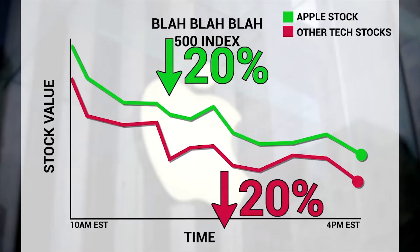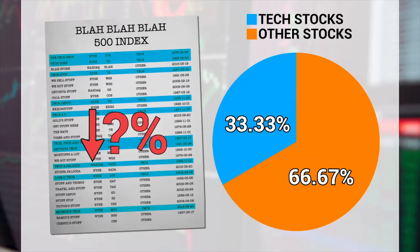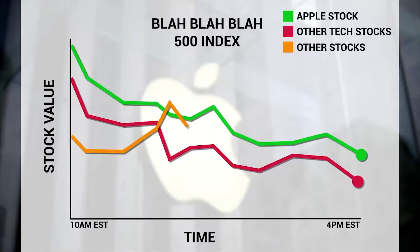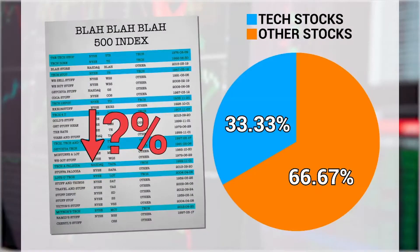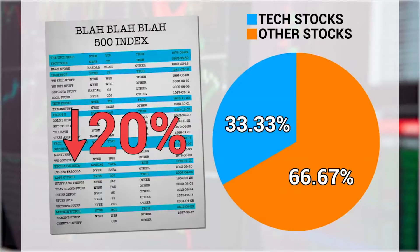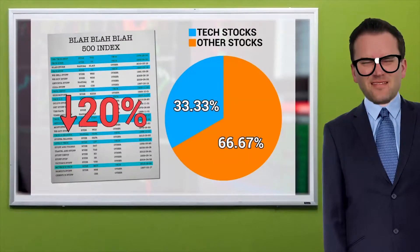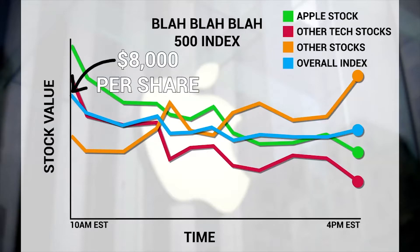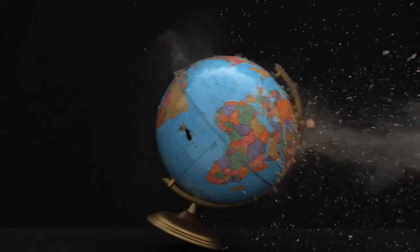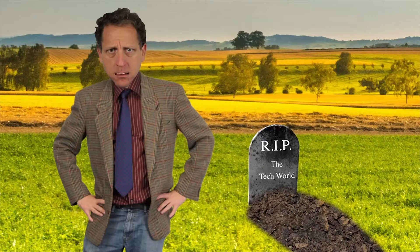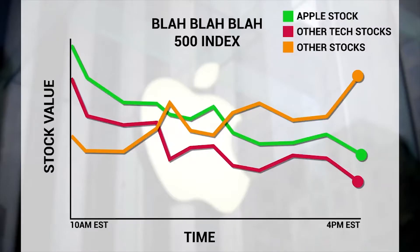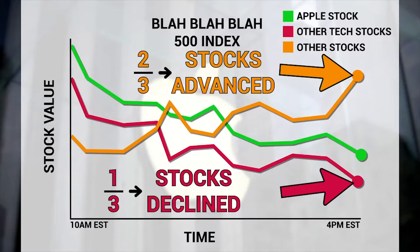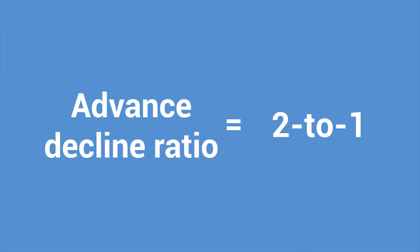So if Apple and tech drop 20% in a given day, and all of tech goes down a meaningful amount, and that index is a third tech — well, the rest of the market: banks, transportation, mining, agriculture, etc., might have had just a fine day. They might have been up. But if tech, which is a third of that index, is all down 20% on that one day, the overall index would show that the whole market's down an ugly 6-plus percent. All you would have seen as an investor is that the blah blah blah 500 index fell from 8,000 to 7,400 today. Two-thirds of the stocks would have advanced and tech — which was a third of them — would have declined. You'd say that the advance decline ratio on that day was 2 to 1.